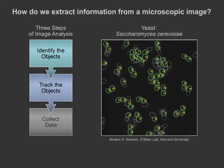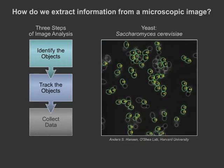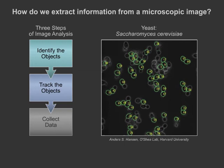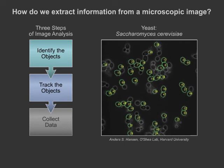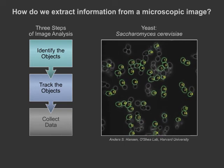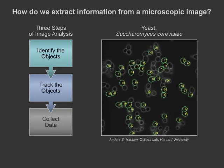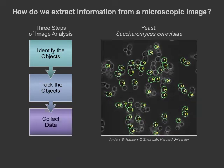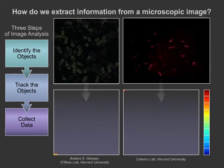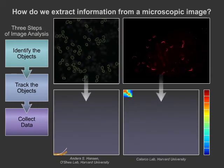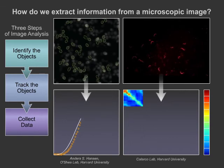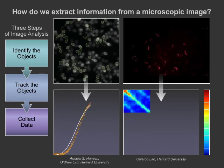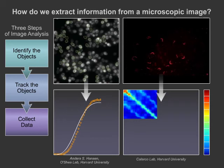Next, we track where the objects are moving throughout the progress of a movie. Then, we collect relevant data. Here, we use our research to show examples of these three steps to extract important information, such as gene expression in yeast cells or the movement patterns of C. elegans.